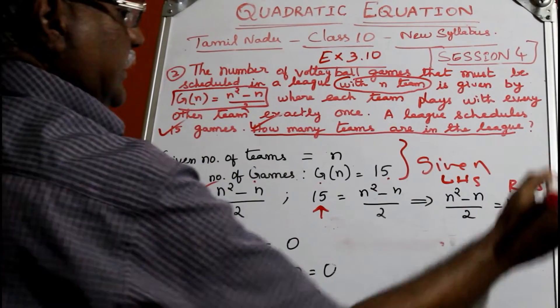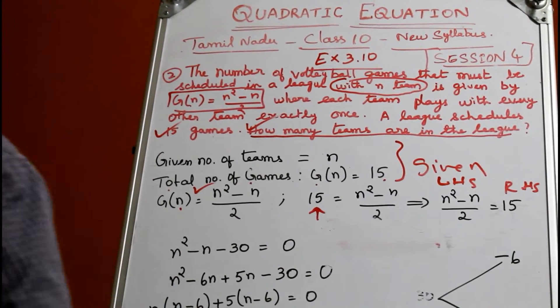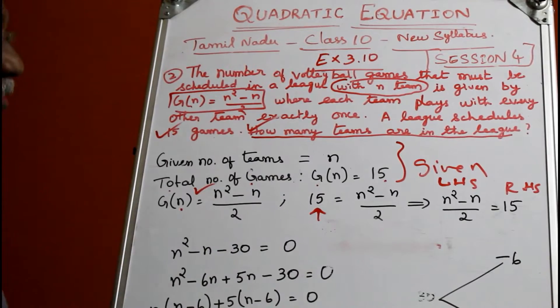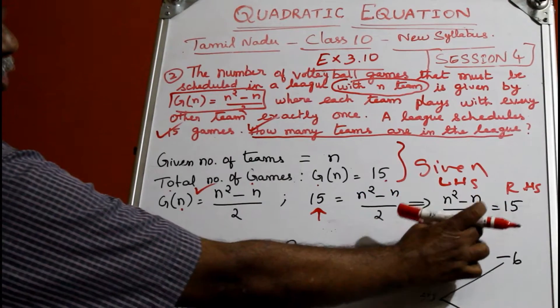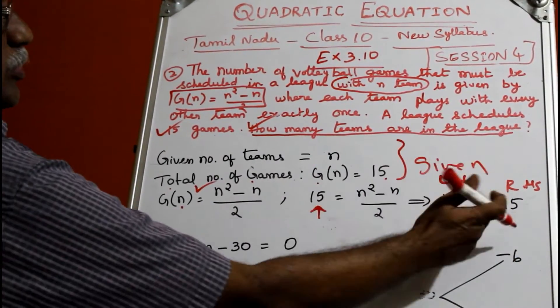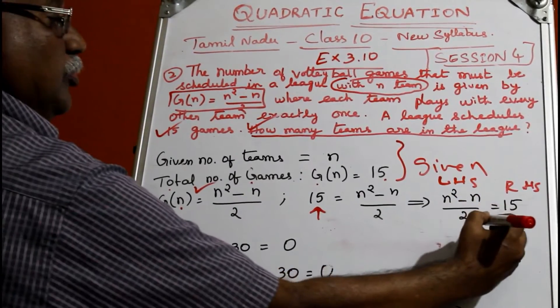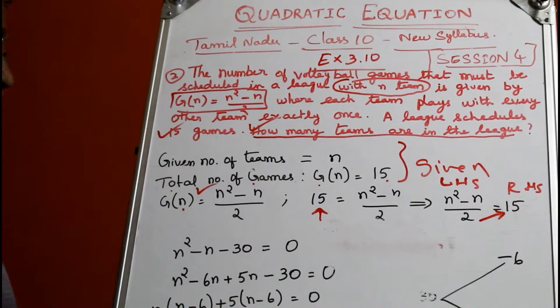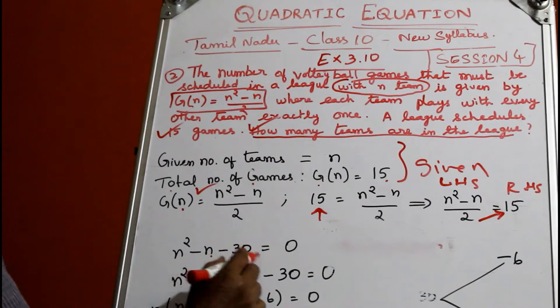Remember, generally unknown letters in simultaneous, quadratic, or linear equations, we keep the unknown letters on the left-hand side. Put this 15, then this 2 will multiply, so you get n² - n - 30 = 0.